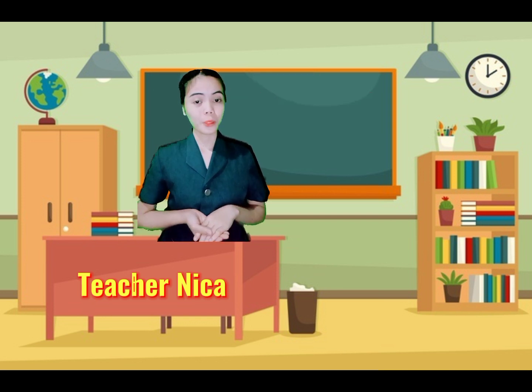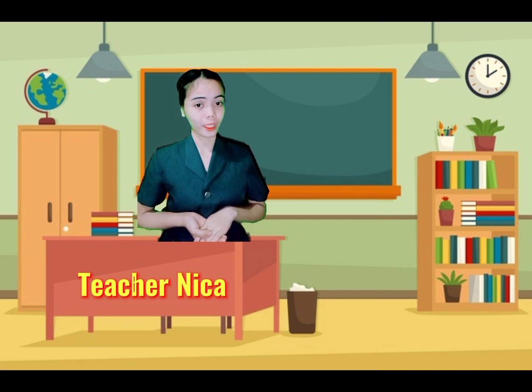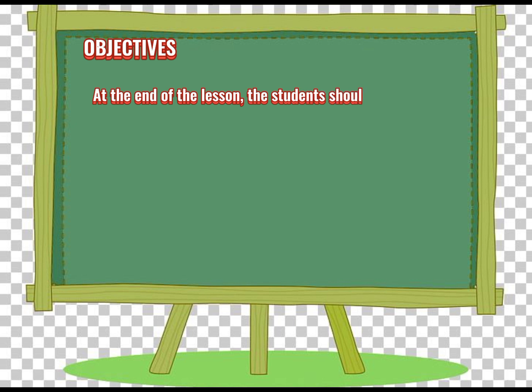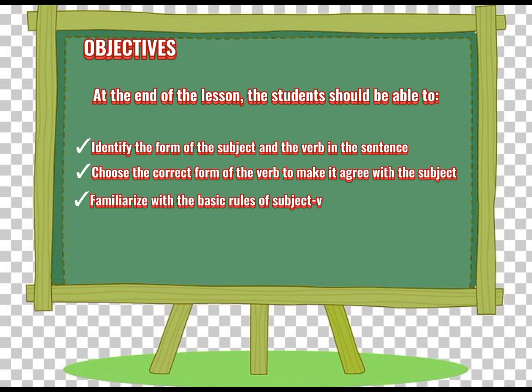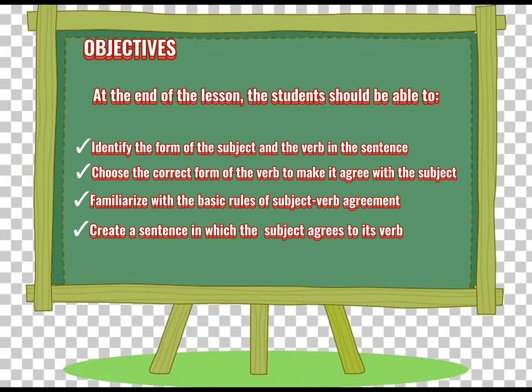Let us read the objectives found on the screen. At the end of the lesson, the student should be able to: first, identify the form of the subject and the verb in the sentence; second, choose the correct form of the verb to make it agree with the subject; third, familiarize with the basic rules of subject-verb agreement; and fourth, create a sentence in which the subject agrees to its verb.